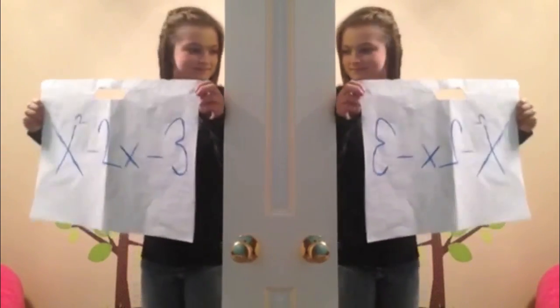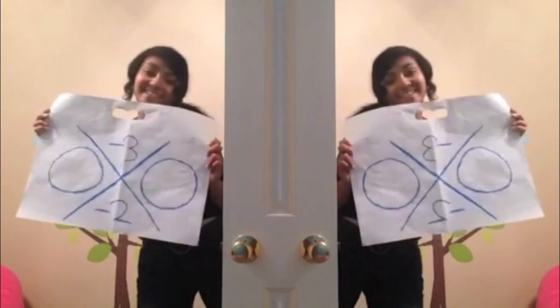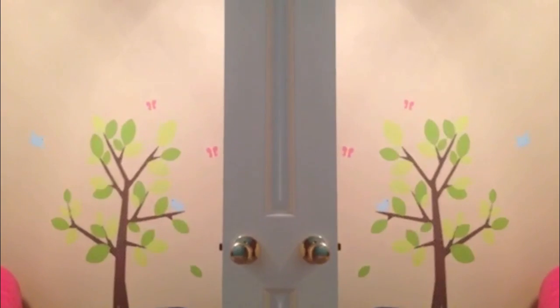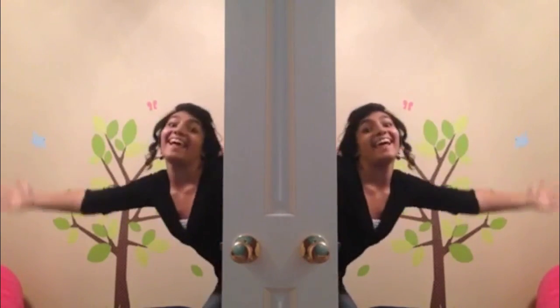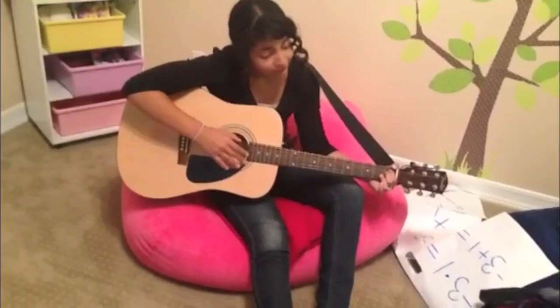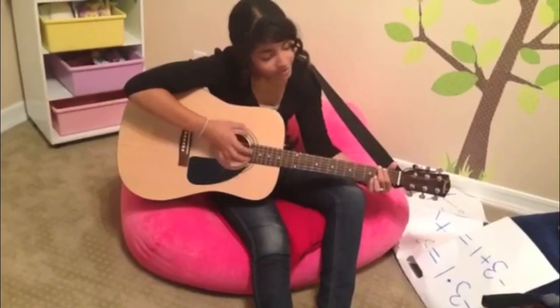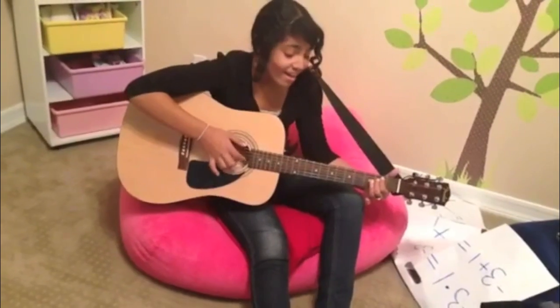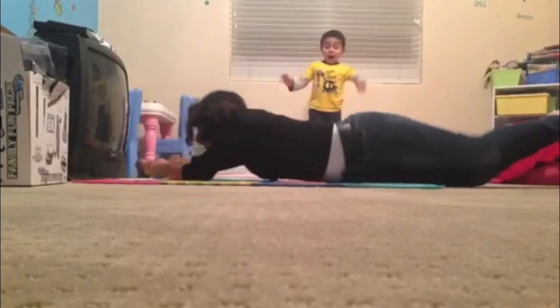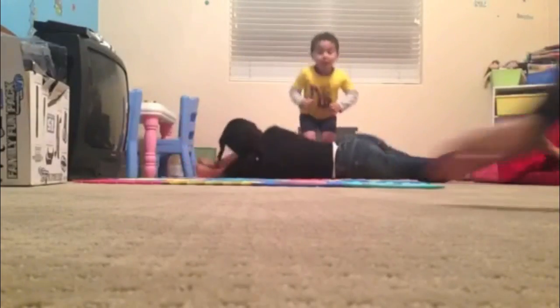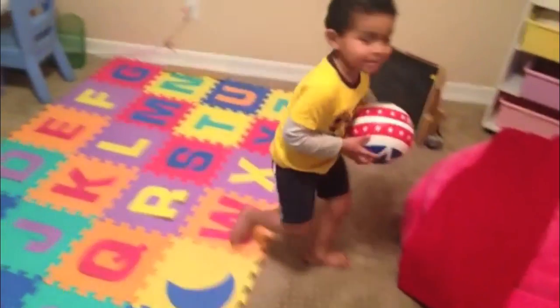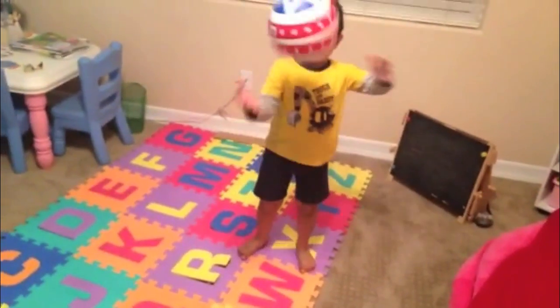Maybe if I get an A plus, my mom will finally give me a hug. It starts with a quadratic equation, then you do hex games to factor it out. Find two numbers with the product of AC and also a sum of B.